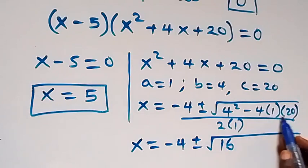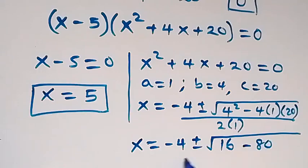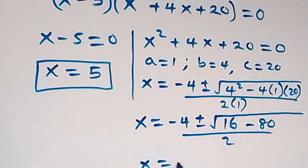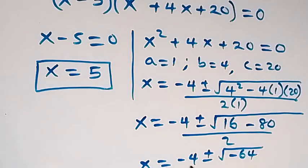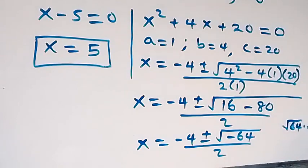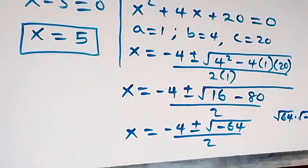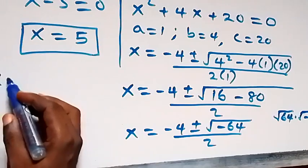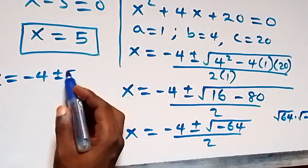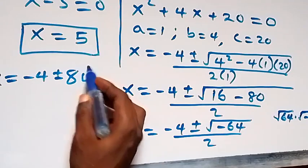...minus 4 times 1 times 20, which gives us minus 80, all over 2. When we solve that, we have x equals minus 4 plus or minus the square root of minus 64, over 2. The square root of minus 64 is the same as the square root of 64 times the square root of minus 1. The square root of minus 1 is i, so x equals minus 4 plus or minus 8i, all over 2.